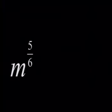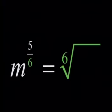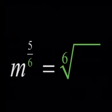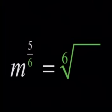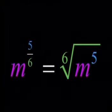Now, can you write this power with a root sign? What do we have in the denominator? A 6. So the root sign must be 6. And what happens with the numerator 5? It stays with the base under the root.